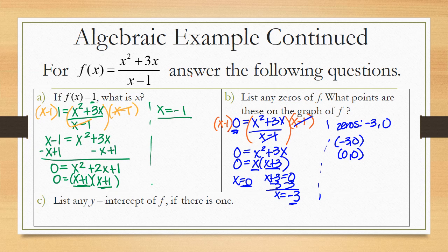The last thing is to find any y-intercepts of f, or y-intercept if there is one. So the y-intercepts occur when x is 0. So let x equal 0 and solve for y. So let's do that.